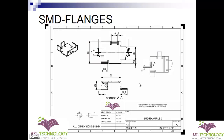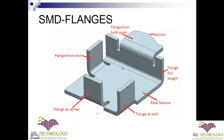This is example number three, where I am going to use it to explain the different types of width options in flanges. If you analyze this model, this is a base feature upon which we have a flange at center, a full length flange, a flange at the end, a flange from the end, and a flange from both ends. We have also finally edited a section of this flange in this plane.